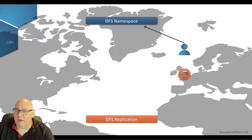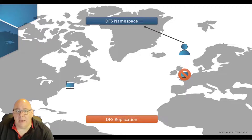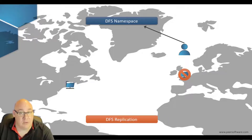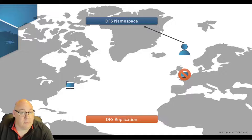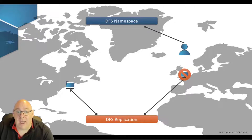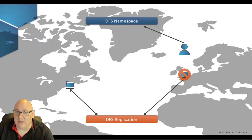And this is where DFS Replication comes in. It can replicate new and modified files to a second folder target at another site, such as the data centre in New York. So now you have a copy of the data at both locations.